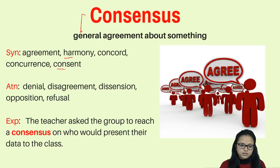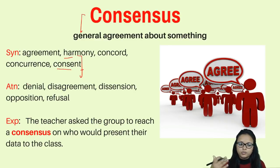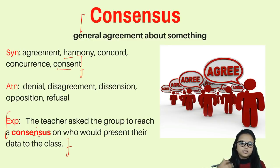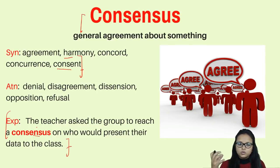Consensus means agreement, harmony, concurrence, and consent — basically the consent of people in an organization, society, or community. The antonyms are denial, disagreement, dissension, opposition, and refusal. Example: the teacher asked the group to reach a consensus on who would present their data to the class — meaning the group has to decide together on a particular issue.